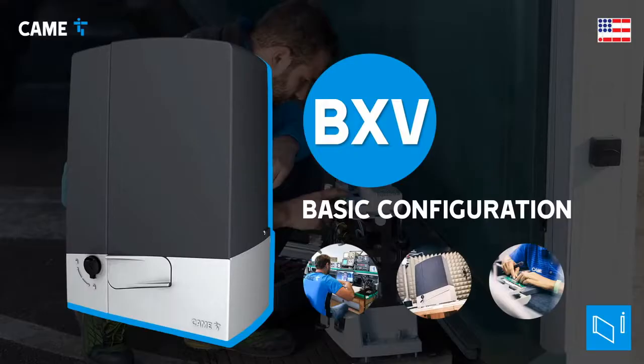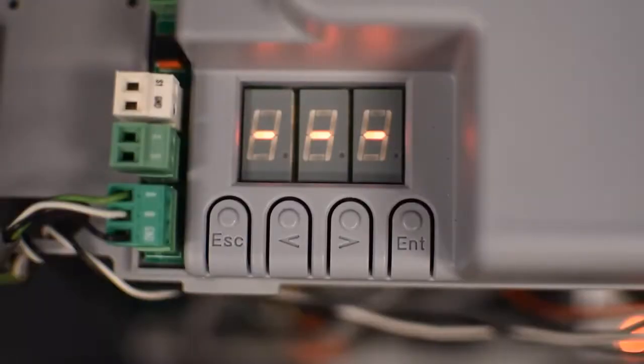In this video we're going through the basic configuration of a CAME BXV operator. When you first power the operator, you'll see lines blinking in the display indicating that we haven't calibrated the encoder yet, but before doing that...